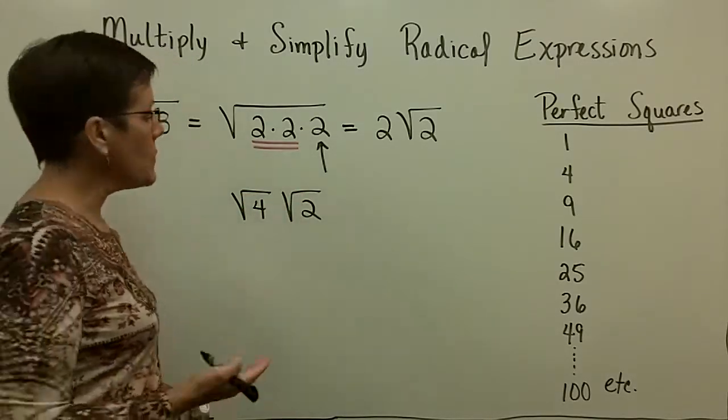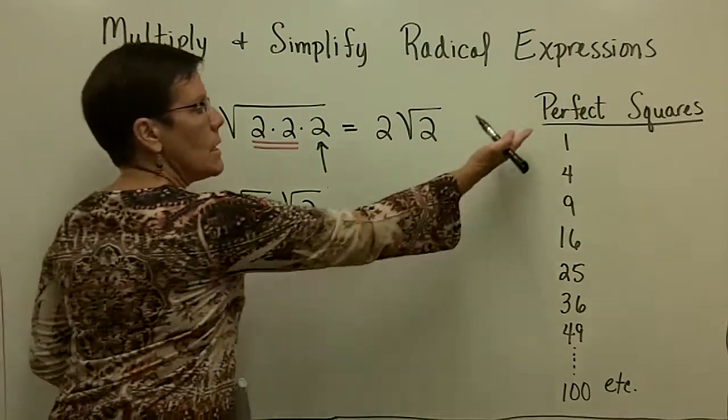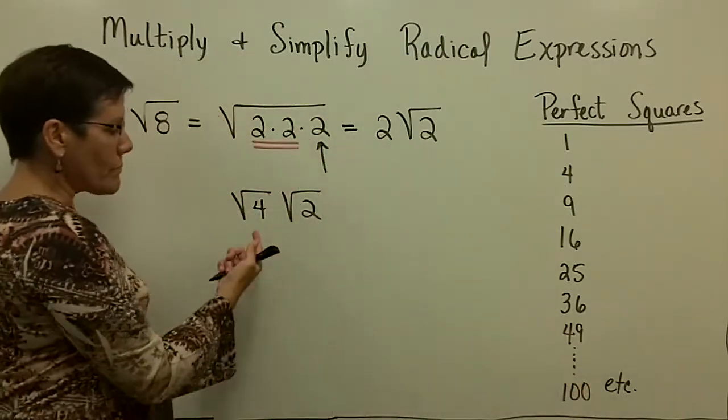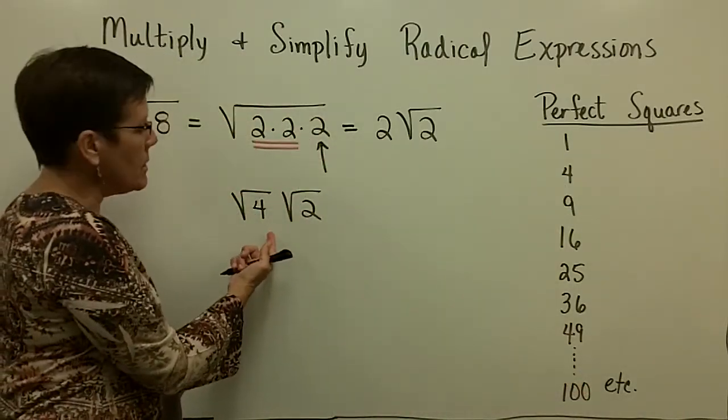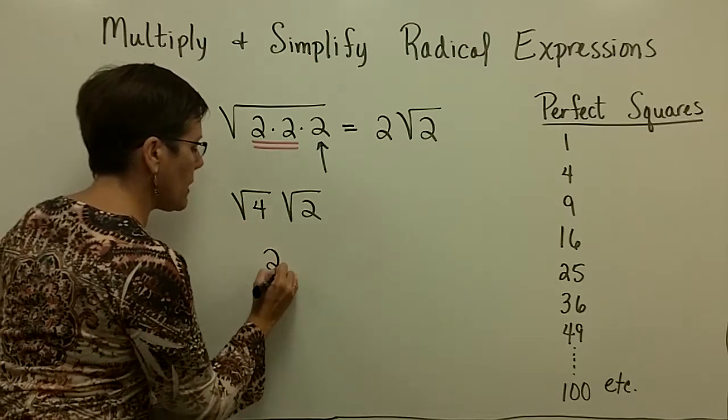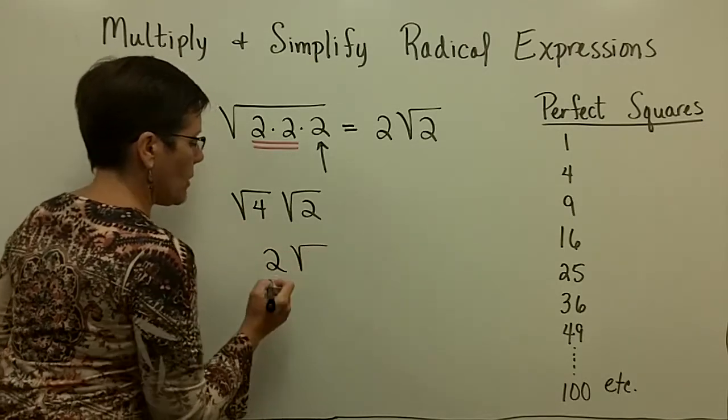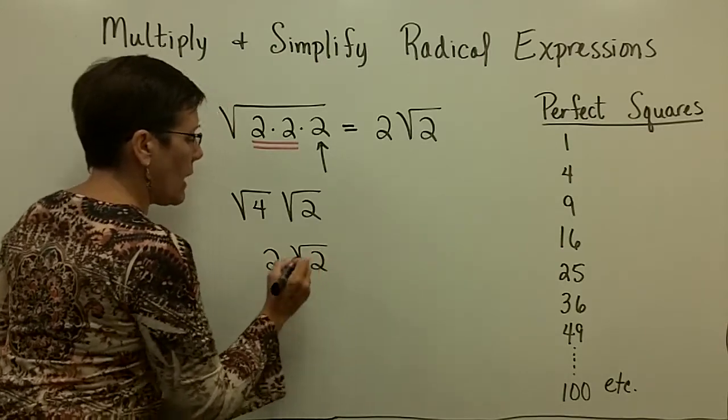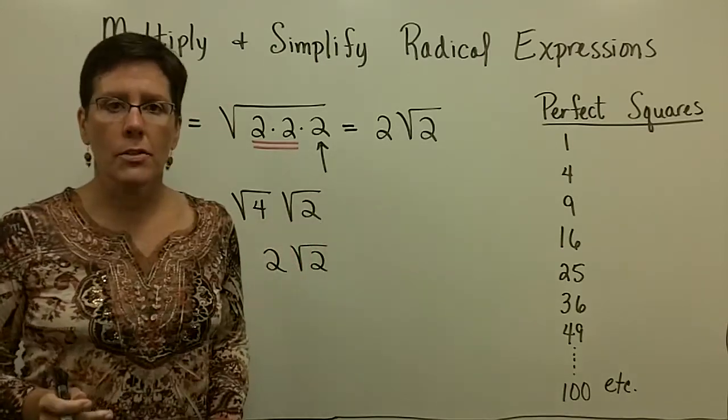and I know that this one is a perfect square, because I know the square root of 4 is 2, I can take it out from under, and write it as its integer value, and bring down the other factor, the other radical factor.